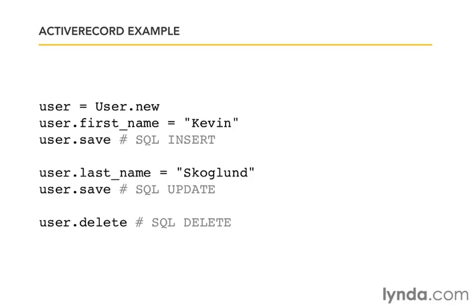That's especially true once our objects become much more complicated. Next I set the attribute last name equal to Skoglund, and then said user.save again. This time, instead of doing an insert statement, it knows to do an SQL update statement — because the Active Record object keeps track of the fact that this object has already been stored in the database. So it not only constructs the SQL for me, but it can make choices about what kind of SQL to write. And then user.delete writes an SQL delete statement that deletes it from the database.